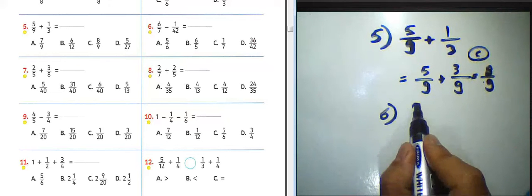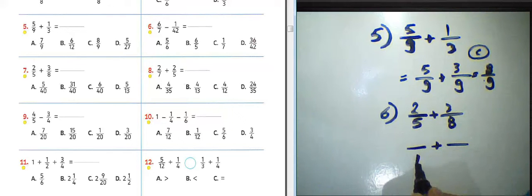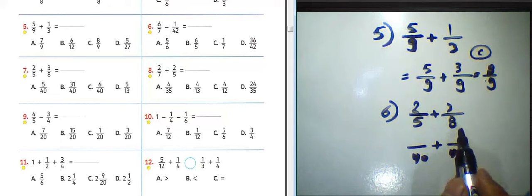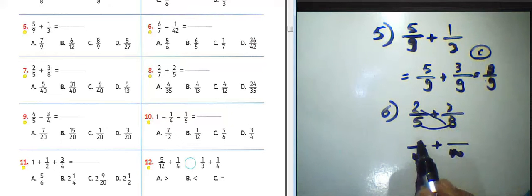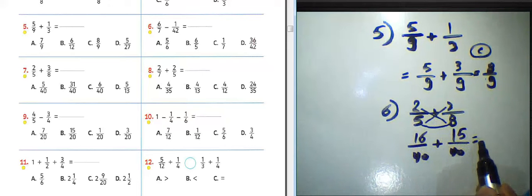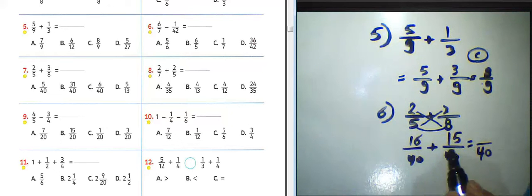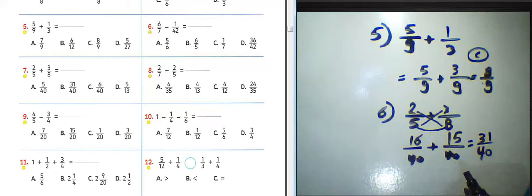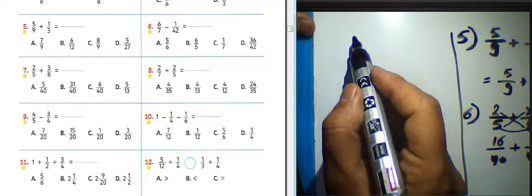Question number six: 2 over 5 plus 3 over 8. We can find the least common multiple between them, which equals 40. Using multiplication of extremes and means: 2 times 8 equals 16, and 3 times 5 equals 15. Write 40 in the denominator. 16 plus 15 equals 31. The result will be 31 over 40. Choose letter B about question number six.